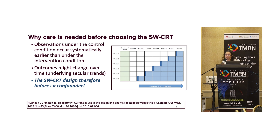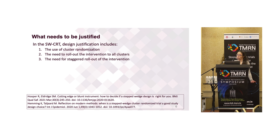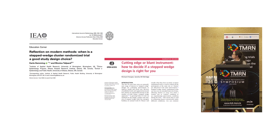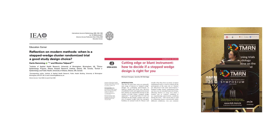So what do we need to justify? First, we need to justify the use of cluster randomization. Then we need to justify rolling out the intervention to all our clusters. And finally, we need to justify the staggered rollout. Those are the three things I want to talk about today. There have been a couple of papers in the methods literature reflecting on this — one by myself and Monica Taljaard, and another by Richard Hooper and Sandra Eldridge. Much of what I'm going to talk about has been covered in those two articles.